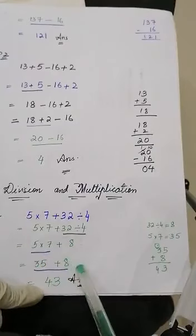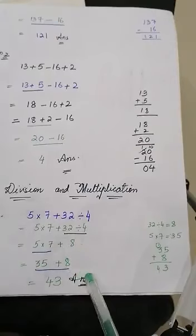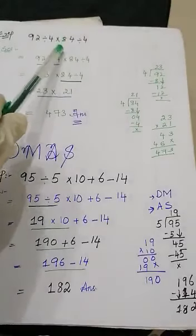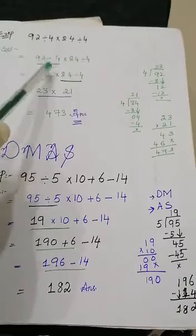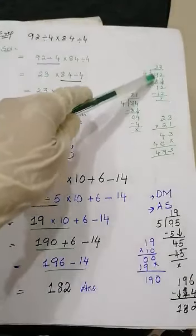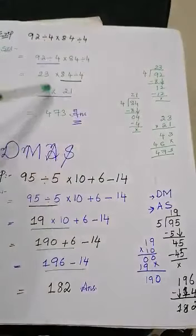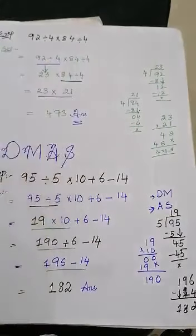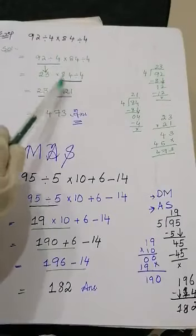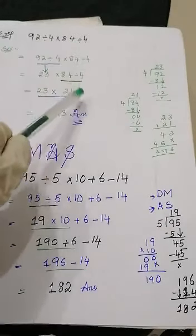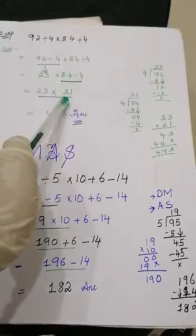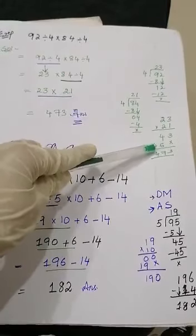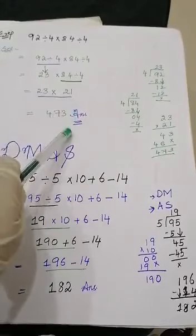35 plus 8 equals 43. Now let me consider an example with only division and multiplication. First, divide: 92 divided by 4. 4 twos are 8, 9 minus 8 is 1, bring down 2, 4 threes are 12 — so 92 divided by 4 equals 23. Then multiply: 23 multiplied by 21 equals 473.